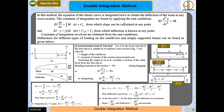As an example, consider a cantilever beam with a point load W acting at the free end. We take x = 0 at the free end and x = L at the fixed end, so the x direction goes from right to left.